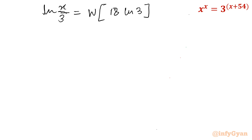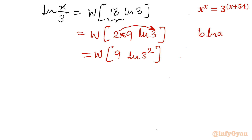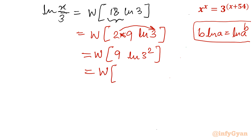Now I factor 18 as 2 × 9. The 2 goes into the power of ln: using b·ln(a) = ln(a^b), I write 2·ln3 = ln(3^2) = ln9. So 18·ln3 becomes 9·ln9, and W(9·ln9) is what we need to evaluate.